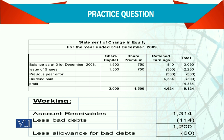There is an opening balance from the previous year and then the issue of new shares. There is also a previous error, so that error will be adjusted to retained earnings. Then the dividend paid is deducted.